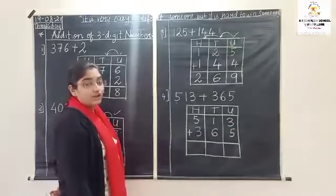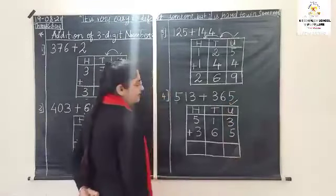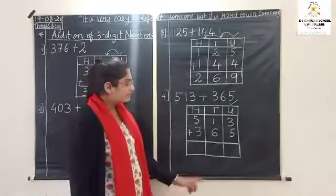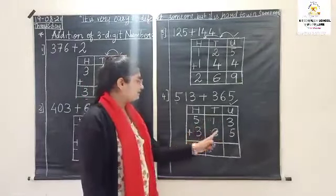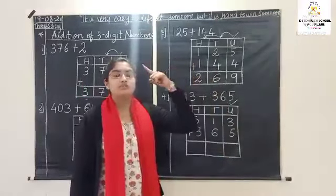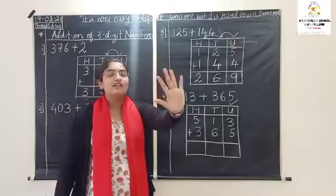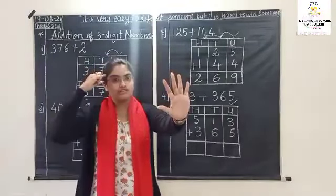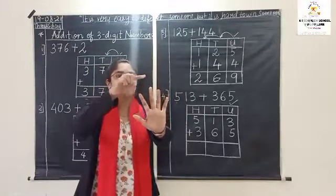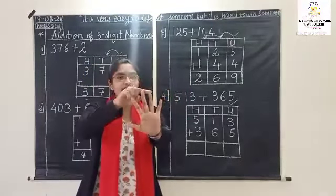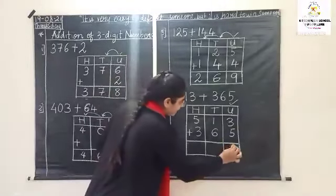As you all know, from where do we have to start? Units place. See the number in units place: three plus five. Keep three in mind, remove five fingers. After three: four, five, six, seven, eight. So the answer is eight.